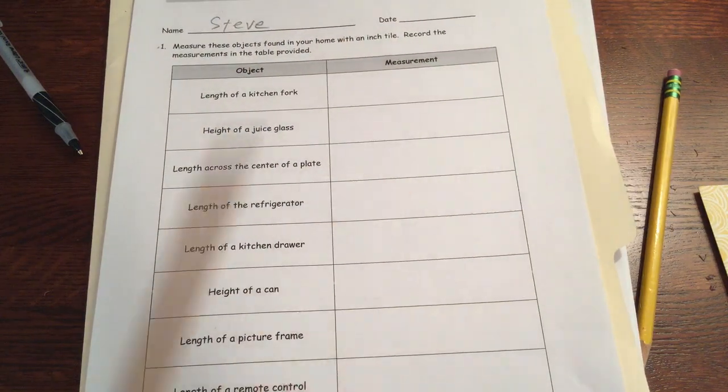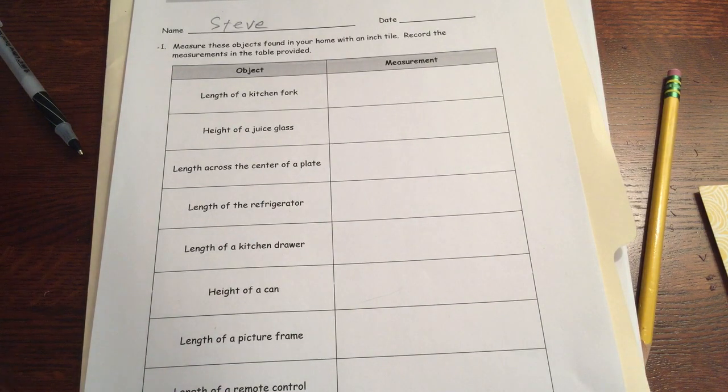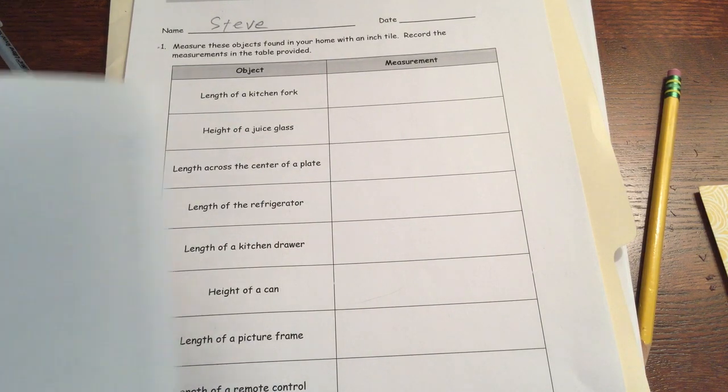If you don't have an inch tile, it's just a square inch, you can make one using a piece of paper and a ruler. I'll show you how to do that.